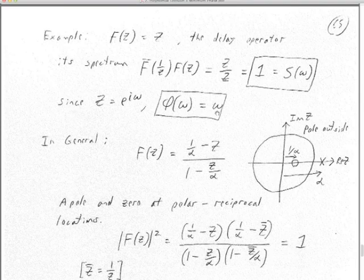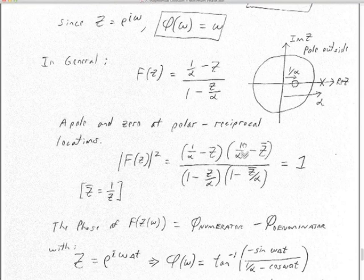At zero frequency the phase is zero; at frequency 2π the phase is 2π. This means that one time around the unit circle for the phase spectrum, you don't come back to the same phase. So this all-pass filter z is not a minimum phase filter — just a little side note to connect what we did yesterday.